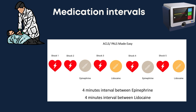A helpful memory aid: after an even number of shocks — shock 2, 4, 6 — the patient receives epinephrine; after an odd number of shocks — shock 3 and 5 — the patient receives lidocaine. If this pattern is followed, your patient will receive 1 dose of epinephrine every 4 minutes and 1 dose of lidocaine every 4 minutes. The usual dose interval for both medications is every 3 to 5 minutes as per AHA guidelines. Note that lidocaine doses could be replaced with amiodarone as an alternative — amiodarone was discussed in a previous video in the emergency medication series.